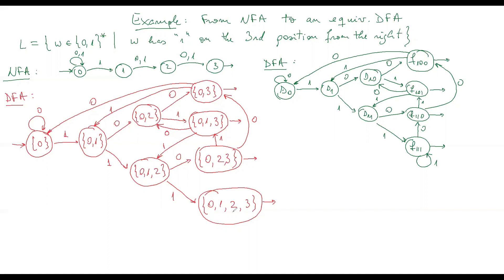From state {0,2,3} with '0': state 3 goes nowhere, state 0 goes to 0, state 2 goes to 3, giving {0,3} — already a state. With '1': state 3 goes nowhere, state 2 leads to {0,1}, state 2 leads to 2, and state 3 leads to 3, giving {0,1,2,3} — already a state with transition '1'.